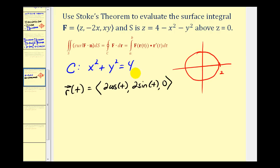And we'll also need the derivative. So we'll have negative two sine T, two cosine T, and zero. And we should also recognize by now that if this is our curve, we know that T will be on the closed interval from zero to two pi. I think we have everything that we need.